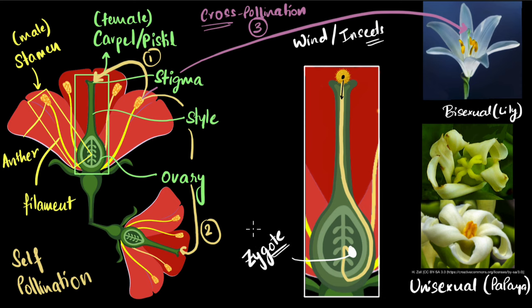The zygote keeps multiplying. Eventually it becomes a tiny baby plant, which we call the embryo. And the embryo eventually gets protected inside a seed.